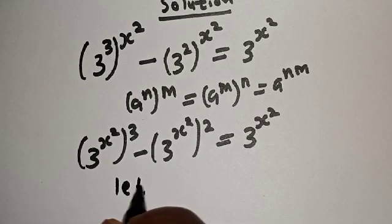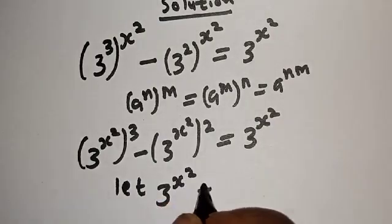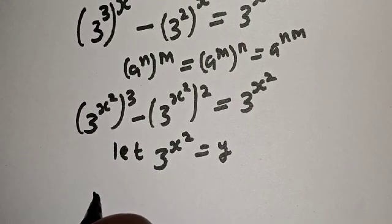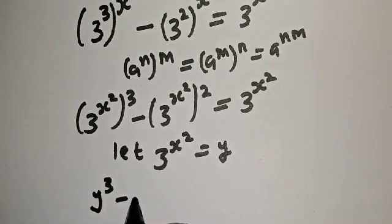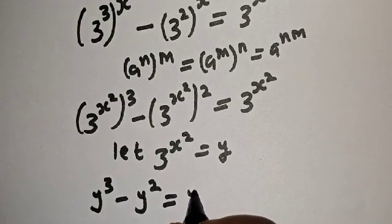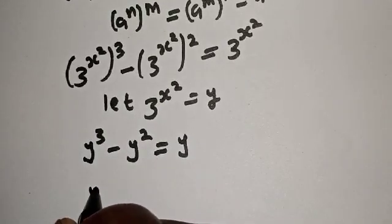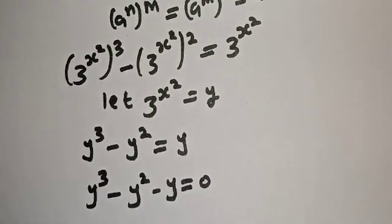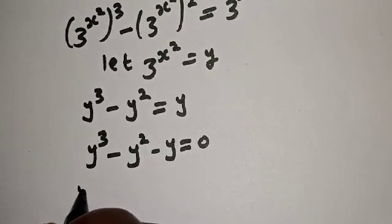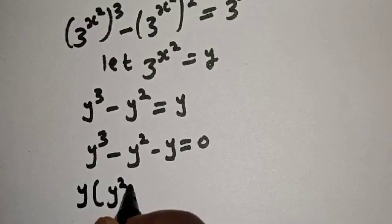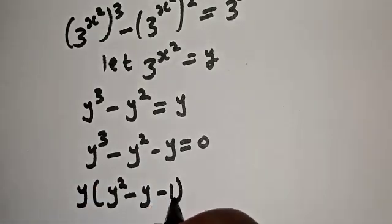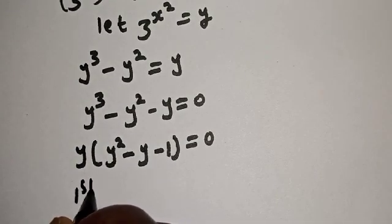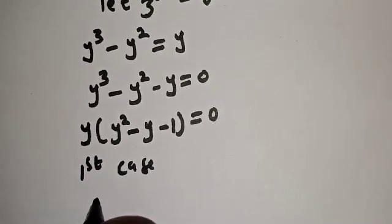Let y equal 3 raised to power x squared. Then we have y raised to power 3 minus y squared minus y is equal to zero. Since y is common, let's factor it out: y times the bracket y squared minus y minus 1, equals zero.